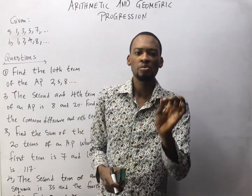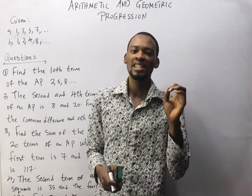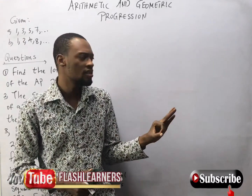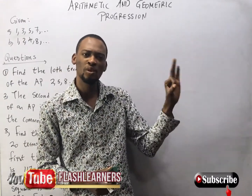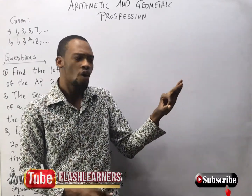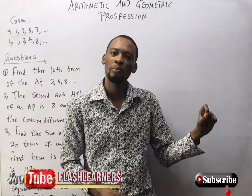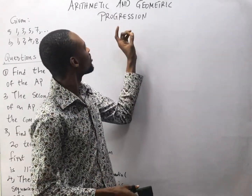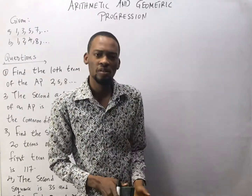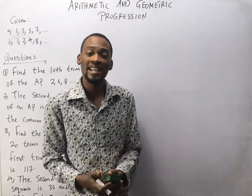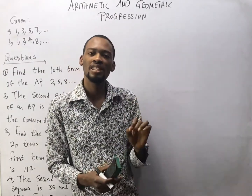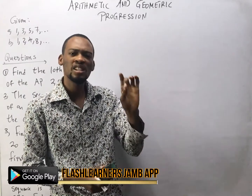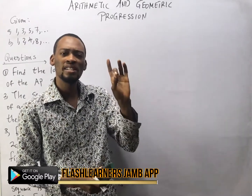If I give you 2, 4, 6, 8, 10, you know that each of the values is different from the previous one by a particular rule or by a constant number. To do well in arithmetic and geometric progression in WAEC, JAMB, GCE, Post-UTME and any examination, you need 2 basic things.